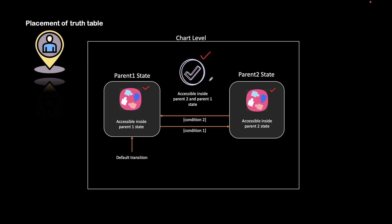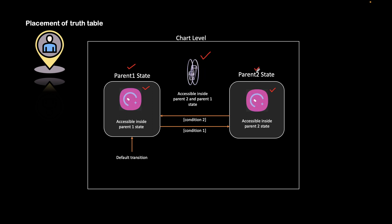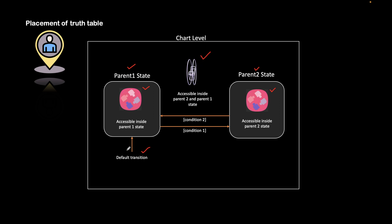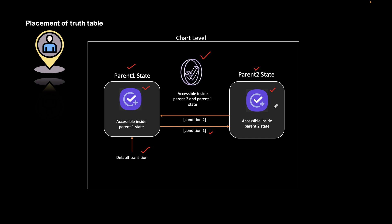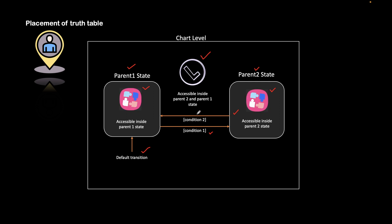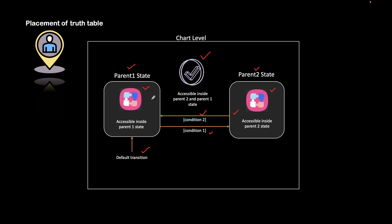Let's see how you should access the truth table depending on where it is placed. In this scenario, you have parent state one and parent state two with transitions going on between them. There is a default transition, and parent state one is the default active state. When condition one is satisfied you transition into parent state two, and when the second transition condition is satisfied you return to parent state one.